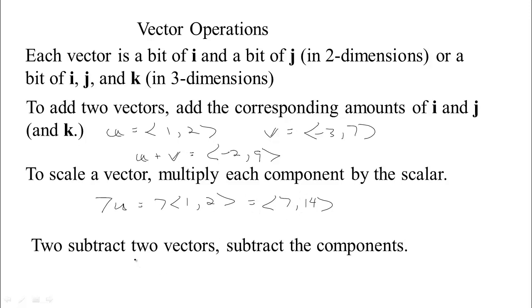If you want to subtract two vectors, just subtract the two components. So v minus u. You would take the first component of v. That's negative 3 minus 1. And then we have 7 minus 2. So the result is negative 4, 5.